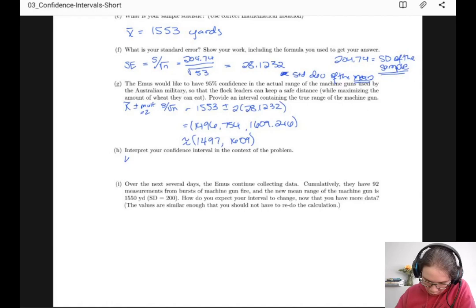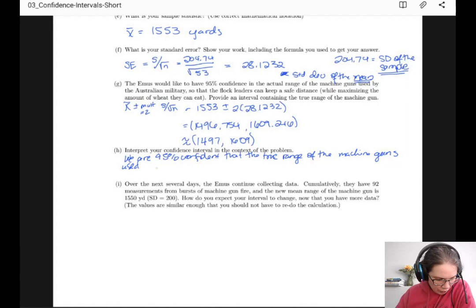So let's interpret this in the context of the problem. We are 95% confident that the true mean range of the machine guns used is between 1497 and 1609 yards.